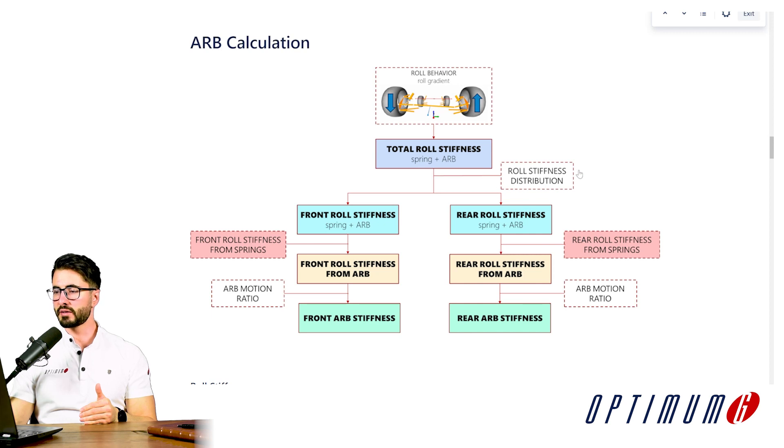So let's understand how much roll stiffness we want on the front axle and how much on the rear axle. For that we need to define the roll stiffness distribution. There is no clear rule — it will be based on experience, previous iterations of the car, tire selections, and weight distribution. A good starting point could be a number between 1 to 5 percent higher than the weight distribution. If our weight distribution is 50%, a good starting number could be a roll stiffness distribution of 55%.